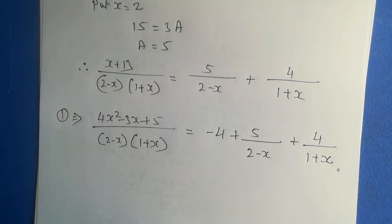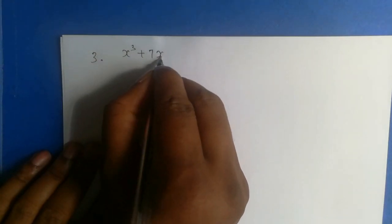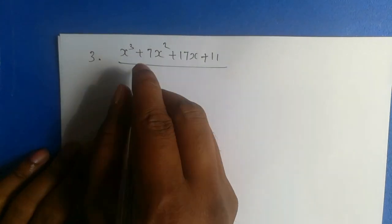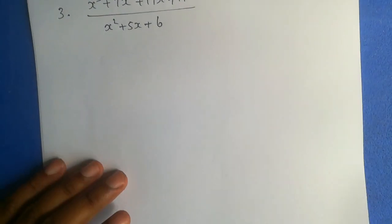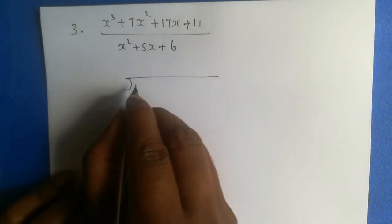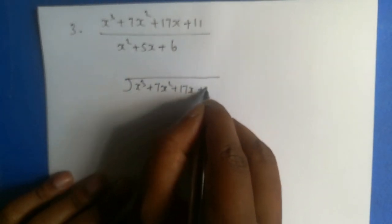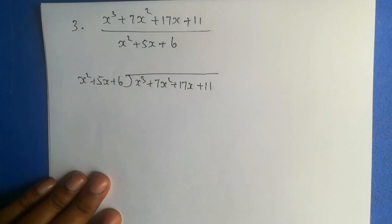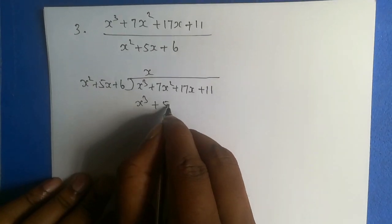Now let's see the third problem. x cubed plus 7x squared plus 17x plus 11 divided by x squared plus 5x plus 6. This is an improper fraction, so we will divide this. Dividing x cubed plus 7x squared plus 17x plus 11 by x squared plus 5x plus 6 — the division we have seen already.